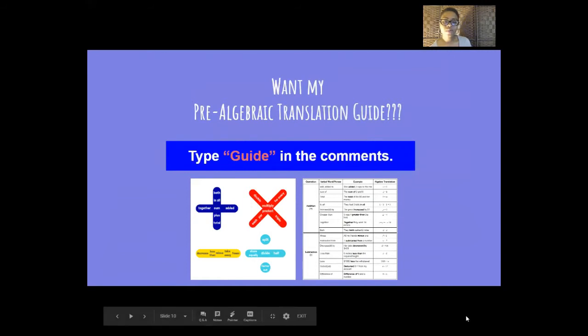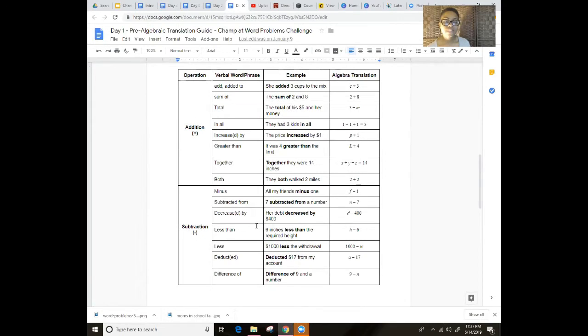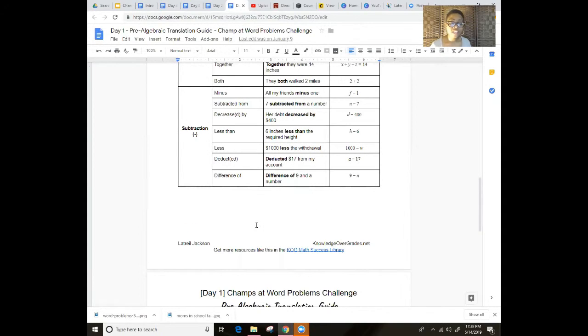Let me show you how it looks. Here's the pre-algebra translation guide. And here's the table that actually shows you how you can identify verbal words and phrases that actually translate to algebra expressions. Words for addition, like increased by, together, those are addition words. Words for subtraction, like decreased by, difference of, deducted, those are subtraction words. And you'll find examples in the right column.